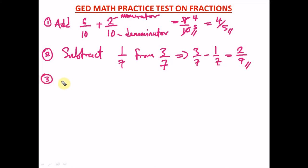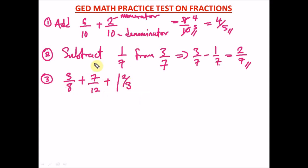Now for question three: 3 over 8 plus 7 over 12, plus 1 and 2 over 3. We need to add all of this. You can see that last term is a mixed fraction, and you have to convert it to an improper fraction. On this channel there's a video on how to convert mixed fractions to improper fractions.